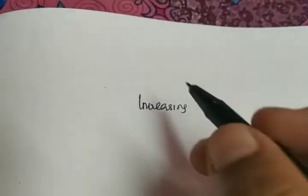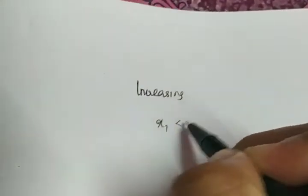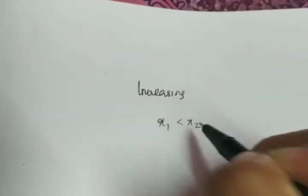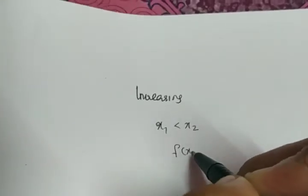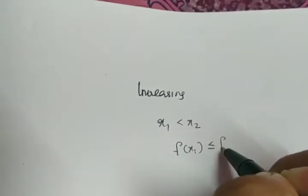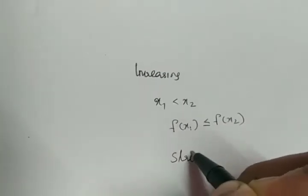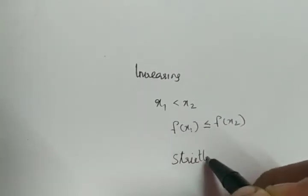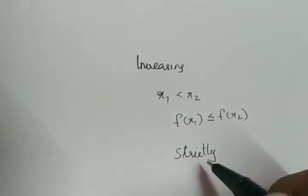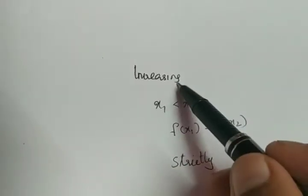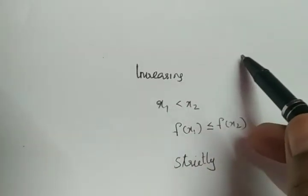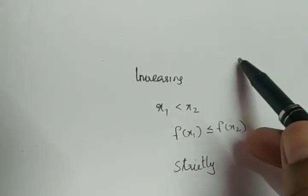For an increasing function, the graph will move upwards or will be parallel to the x-axis. If x1 is less than x2, then for an increasing function, f of x1 will be less than or equal to f of x2. For a strictly increasing function, the graph will only be moving upwards — it will not be parallel to the x-axis.